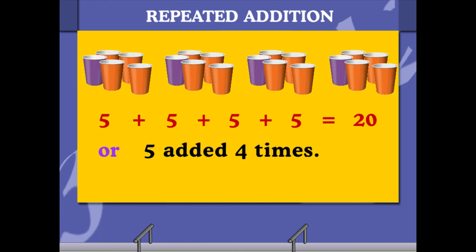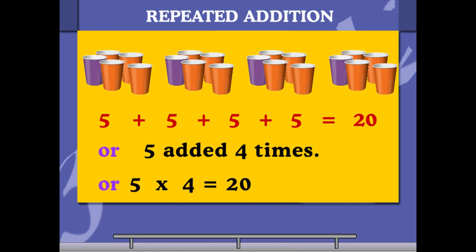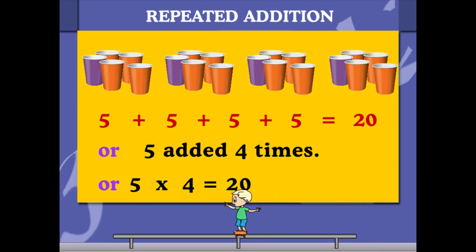Five into four is equal to 20. Repeated addition can be done by multiplying.